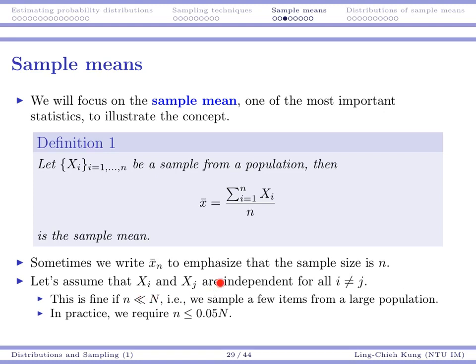We always assume that all the values in a sample are independent of each other. That means whether I draw one observation does not affect my probability of drawing another. This is a reasonable assumption if our sample size is much smaller than the population size, especially when we do sampling without replacement. In practice, we need n to be less than or equal to 5% of the population, and then we can safely say that X_i and X_j are independent from each other.